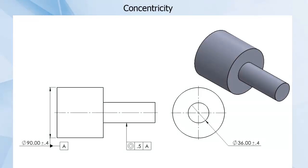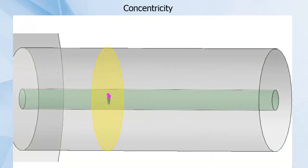If concentricity was called for this end of the pin, this process would then need to be repeated along the entire length of the pin. Every median point of diametrically opposed surface points at every cross-section would need to fall inside the defined tolerance zone.